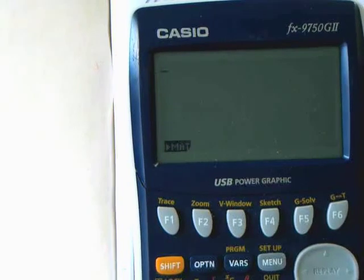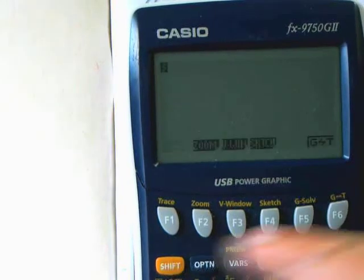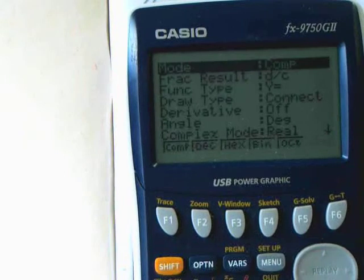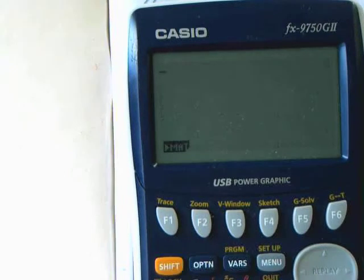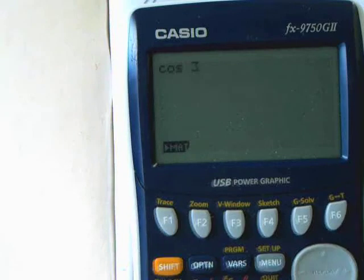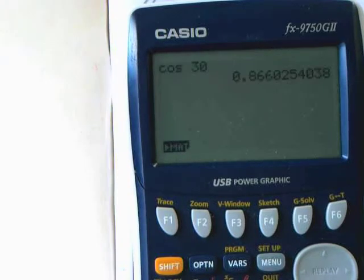A couple of things just to remind you of. If I just make sure this calculator is in degrees for a second, just by clicking set up, there it is. So if I type in cosine 30, I get 0.866.